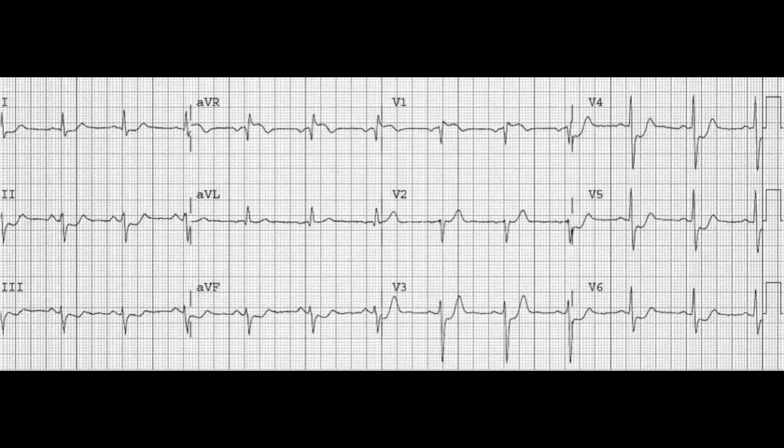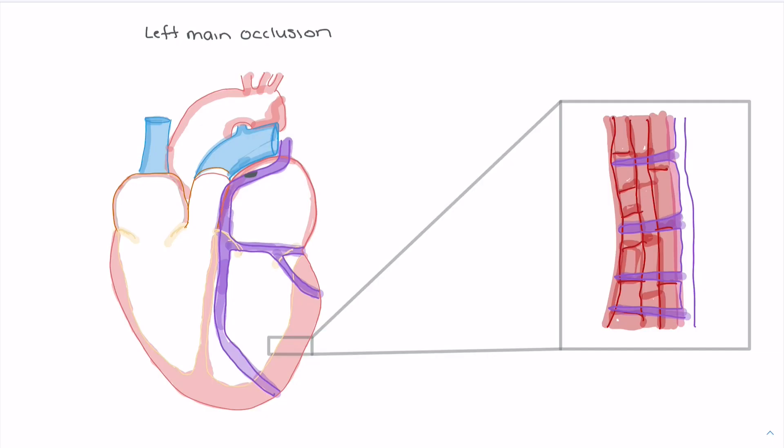In order to better understand these findings — why when I look at AVR and see ST elevation, and look to my other leads and see ST depression, should I be thinking about left main coronary artery occlusion — let's take a look at the heart and the anatomical features that may actually lead to that ST elevation or ST depression due to a left main occlusion.